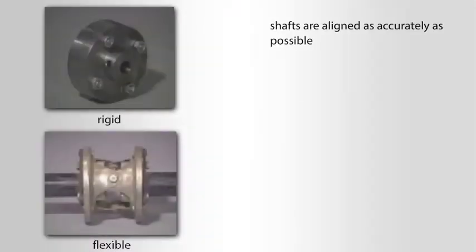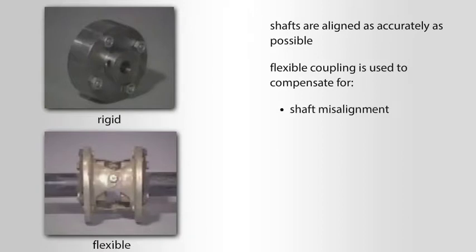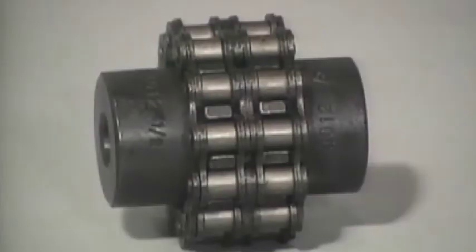Usually the shafts are aligned as accurately as possible, then a flexible coupling is used to compensate for any small degree of shaft misalignment, movement, or deflection. Many different types of flexible couplings are used, but probably the most common is the chain coupling.